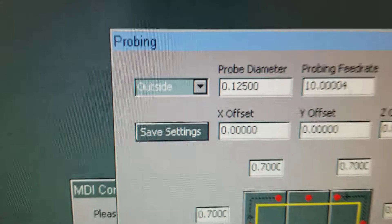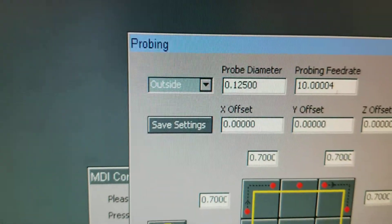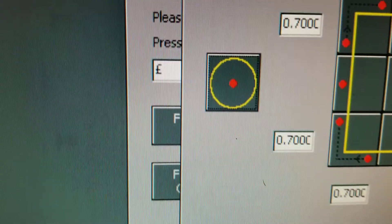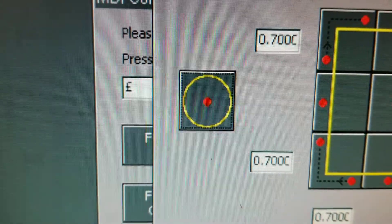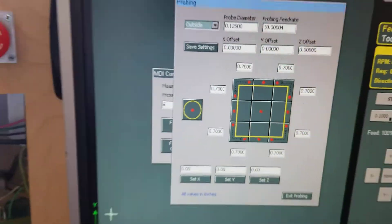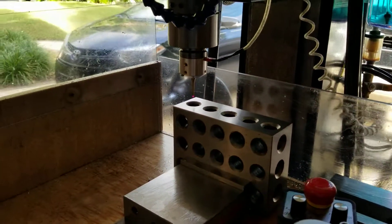So pretty much on any view, whether you're in outside probing or inside probing, it doesn't matter. This little target looking icon is for probing inside parts and essentially it's used to find the center of a hole.